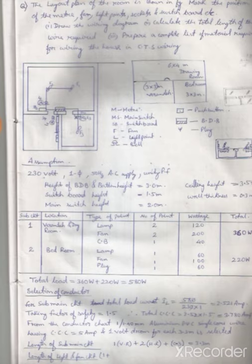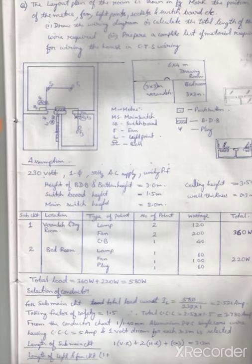Let us divide this circuit into sub circuits with the help of a table. Sub circuit 1: location is veranda and drawing room. Type of point is lamp, fan, and calling bell. Number of points for lamp is 2, each lamp consumes 60 watts, so total is 120 watts. There are two points for ceiling fan, each of 100 watts, total wattage 200 watts. For calling bell, one of 40 watts. Total wattage for sub circuit 1 is 360 watts.